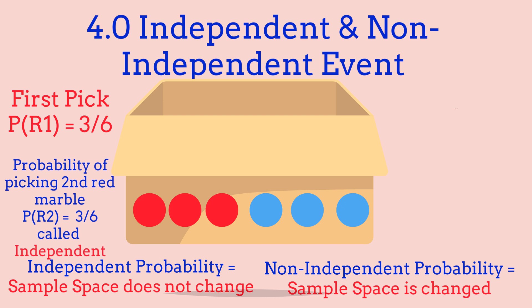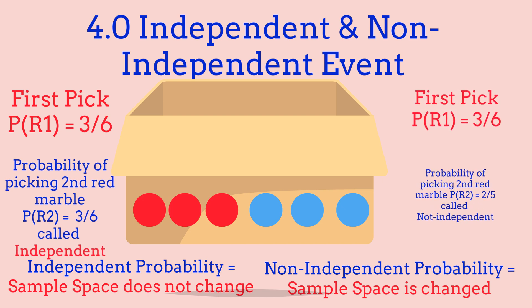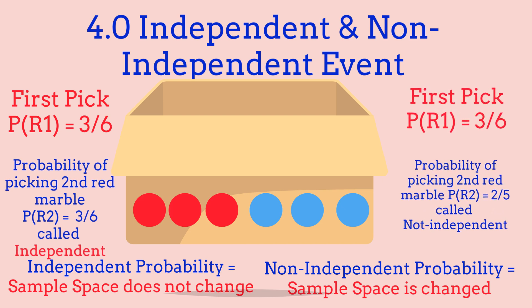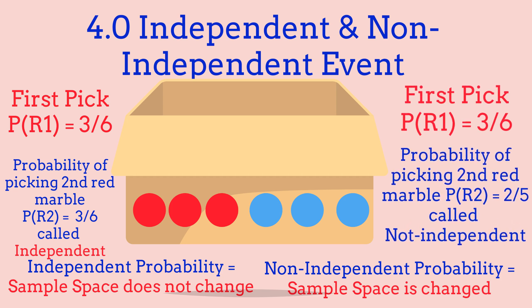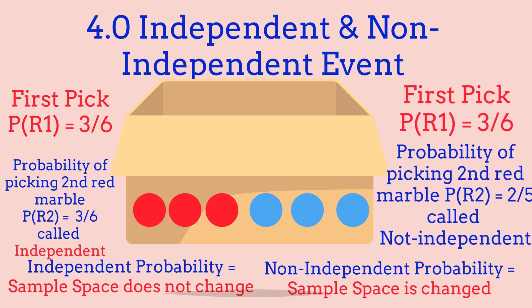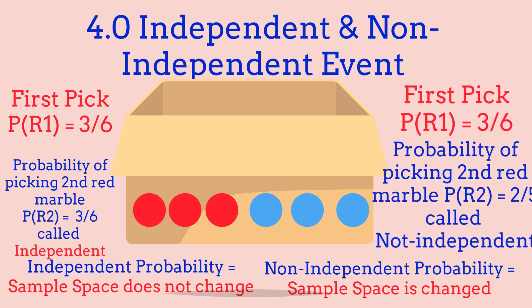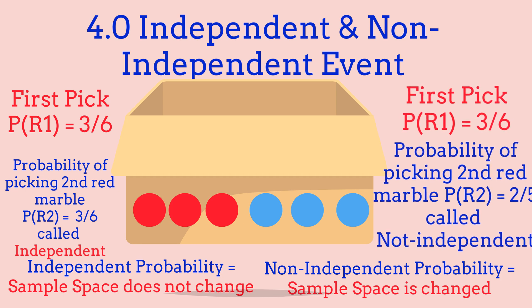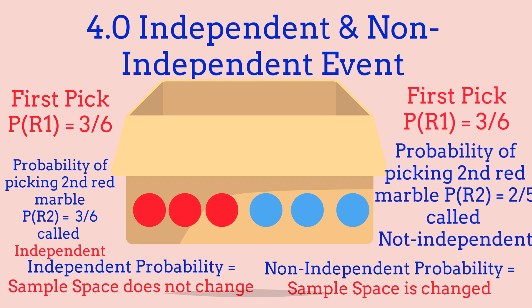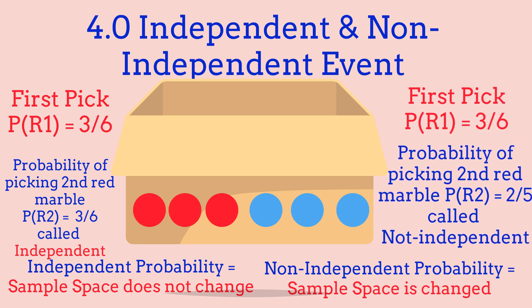But if we take that red marble out and never put it back in, what's the probability of taking out a red marble from the box? Since we removed one, we now have 2 red marbles and 3 blue marbles — 5 marbles in total — so the probability becomes 2 out of 5. That's the difference between independent probability and non-independent probability.